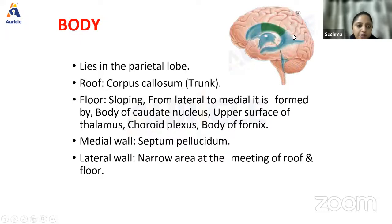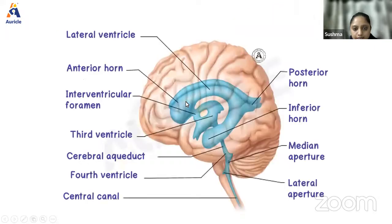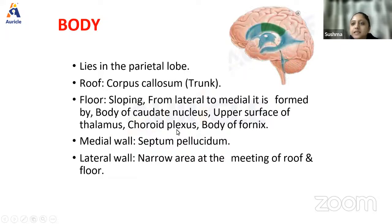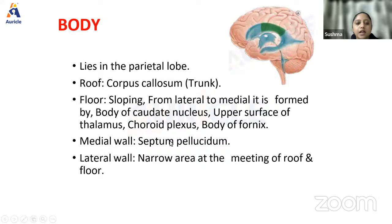The roof of the body of the lateral ventricle is bounded by the corpus callosum. The floor is formed by the body of the caudate nucleus, upper surface of thalamus, choroid plexus, and body of fornix. In the previous class on basal ganglia, I showed pictures of the caudate nucleus, thalamus, internal capsule, and external capsule. Try to orient yourself to where exactly the body of the lateral ventricle is. The medial wall is formed by the septum pellucidum. The lateral wall is a narrow area at the meeting of roof and floor.